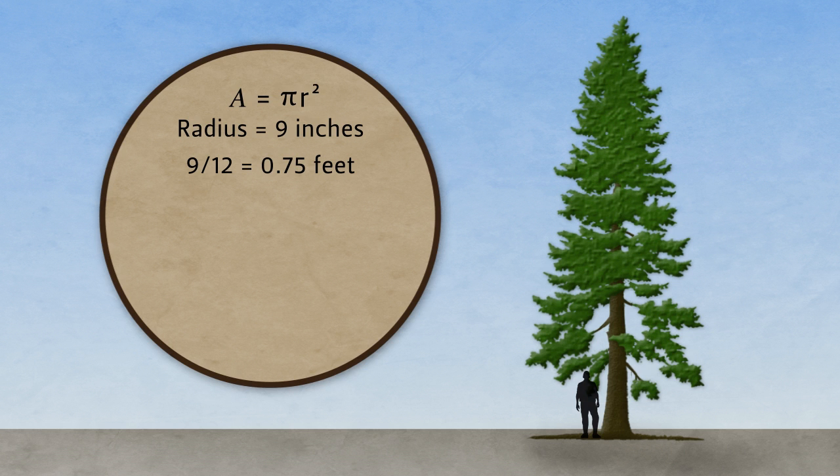Plugging this into our area formula gives us A = π(0.75)², or π times 0.5625, and a result of 1.77 square feet.